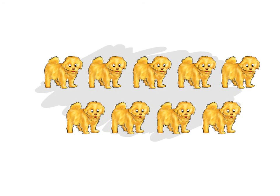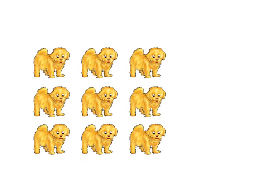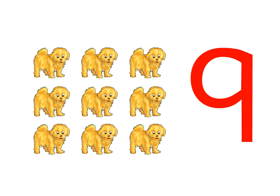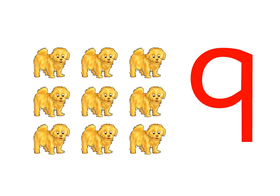How many puppies can you see? Let's count the number of puppies. There are nine puppies. One, two, three, four, five, six, seven, eight, nine.